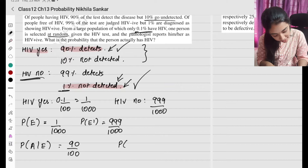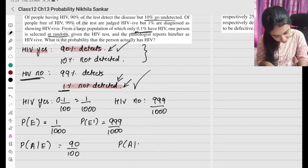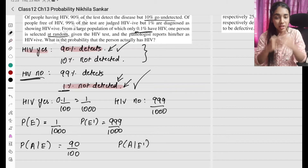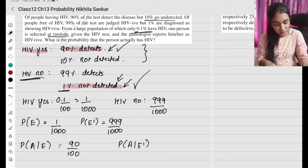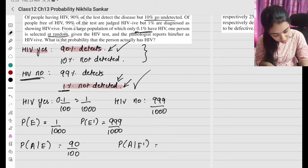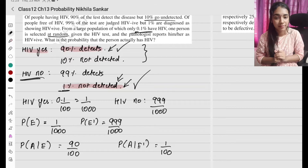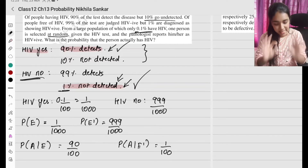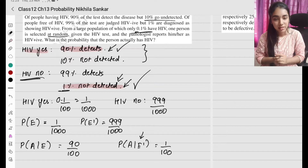The second possibility is the probability that the person has HIV but it is detected in a wrong way. So this is going to be 1%, which is 1 divided by 100. The person has HIV and it is detected wrongly.